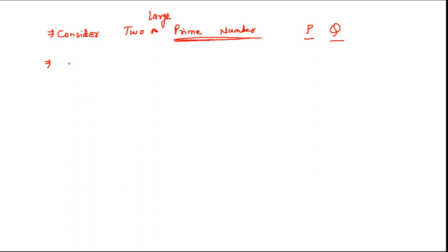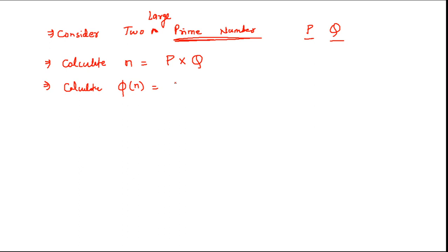After considering the two values of P and Q, we do some calculations. First, calculate a value known as N, where the formula is N = P × Q. Then the next calculation is to compute phi(N), where the formula is phi(N) = (P − 1) × (Q − 1). When you follow this formula you will get the value of phi(N).